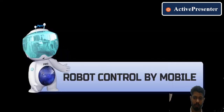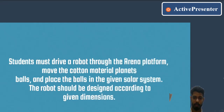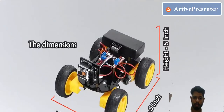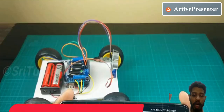Robot control by mobile: students must drive a robot through an arena platform, move cotton material, planets, and balls, and place the balls in the given solar system. The robot should be designed according to the given dimensions. Four members per team. In this competition we are going to make a robot that can move objects from one place to another. All these things we will be teaching you in live classes in the upcoming days.